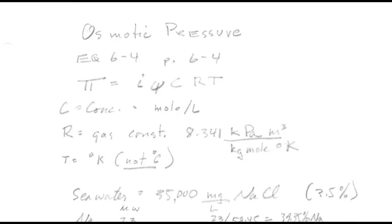The osmotic pressure calculation is based on equation 6.4, which happens to be on page 6.4 of our book. The osmotic pressure symbol is π and it uses the concentration of the solute in terms of moles per liter, a correction factor which is typically around 0.85 to 1, and i is the number of ions. R is the gas constant and T is the temperature in degrees Kelvin.